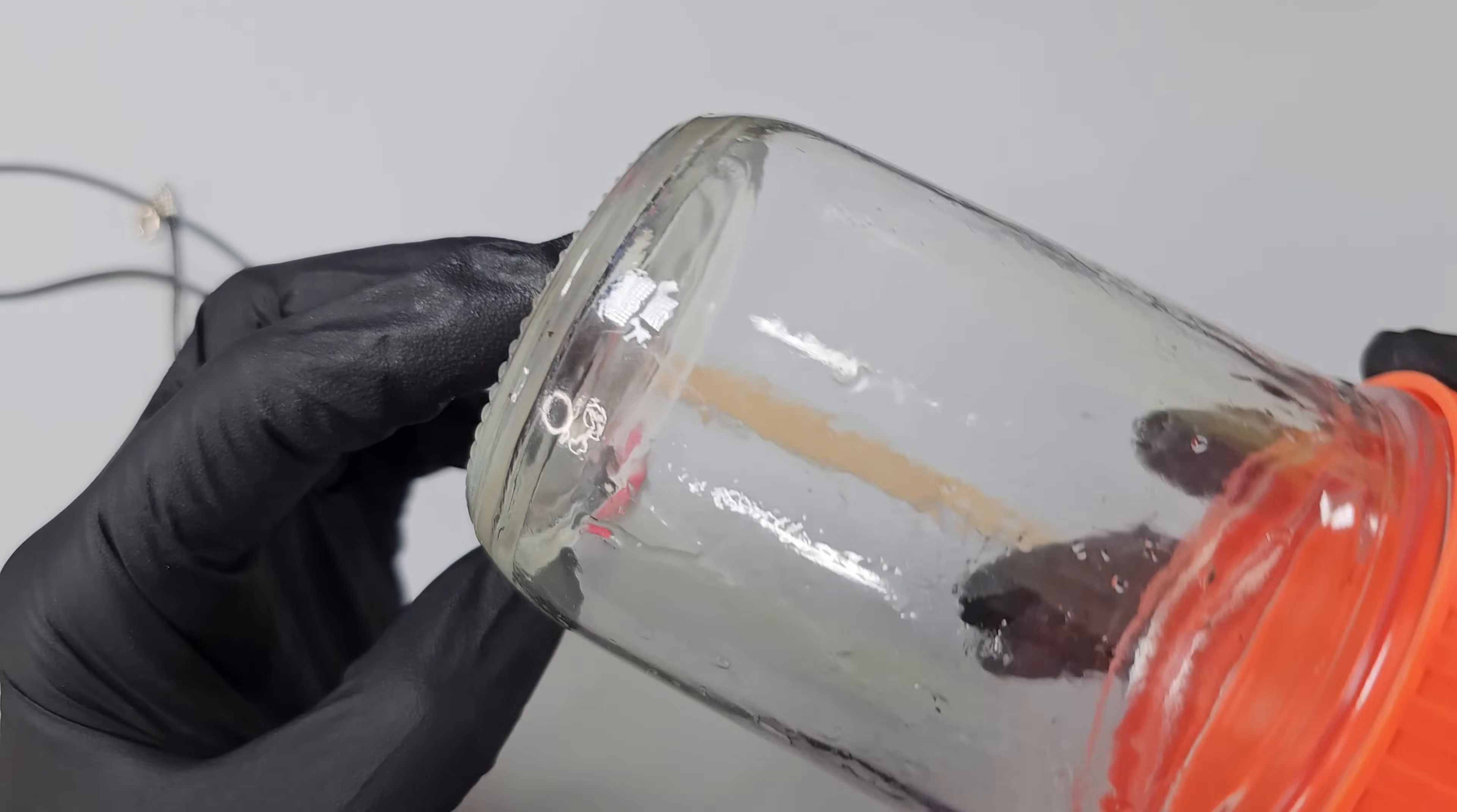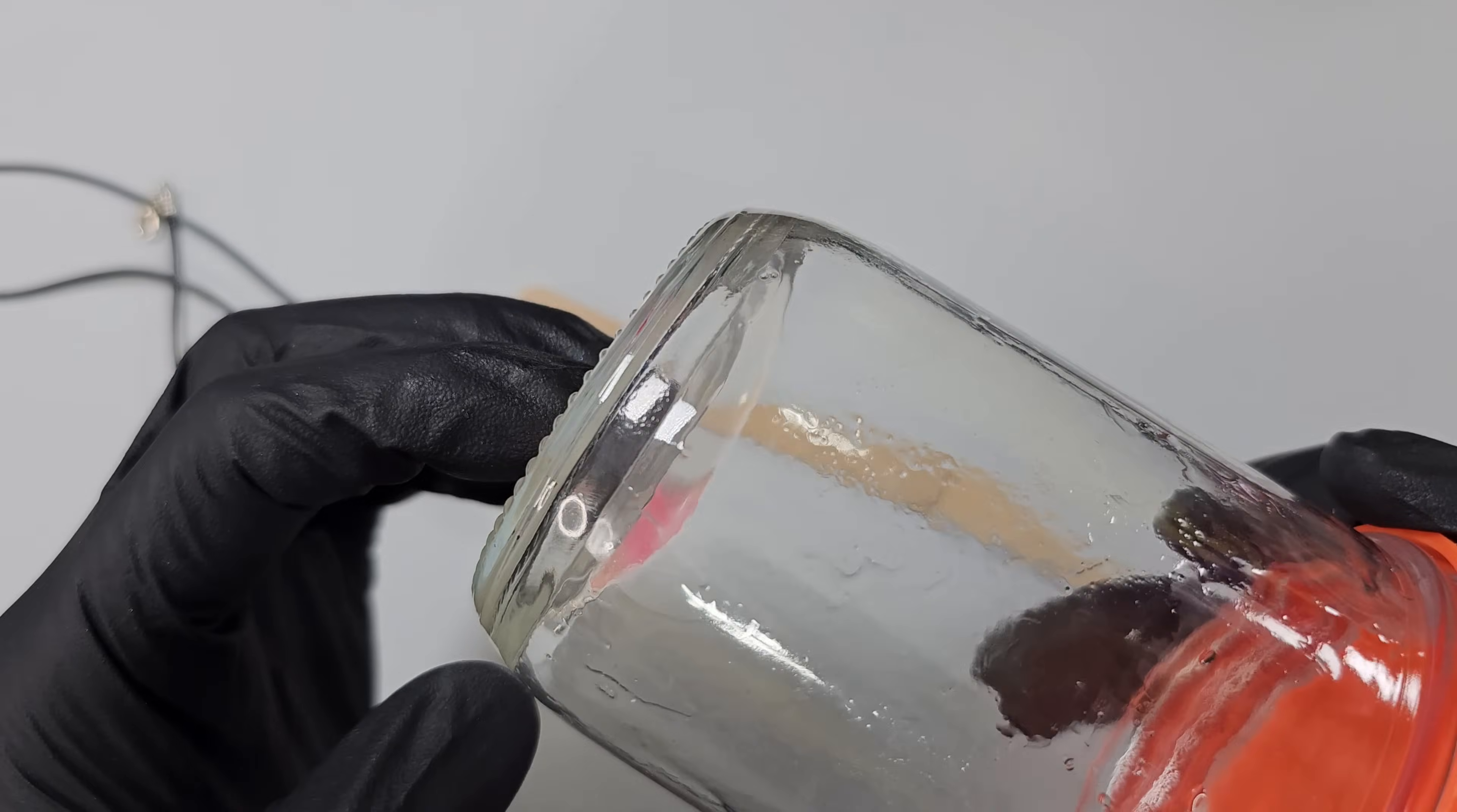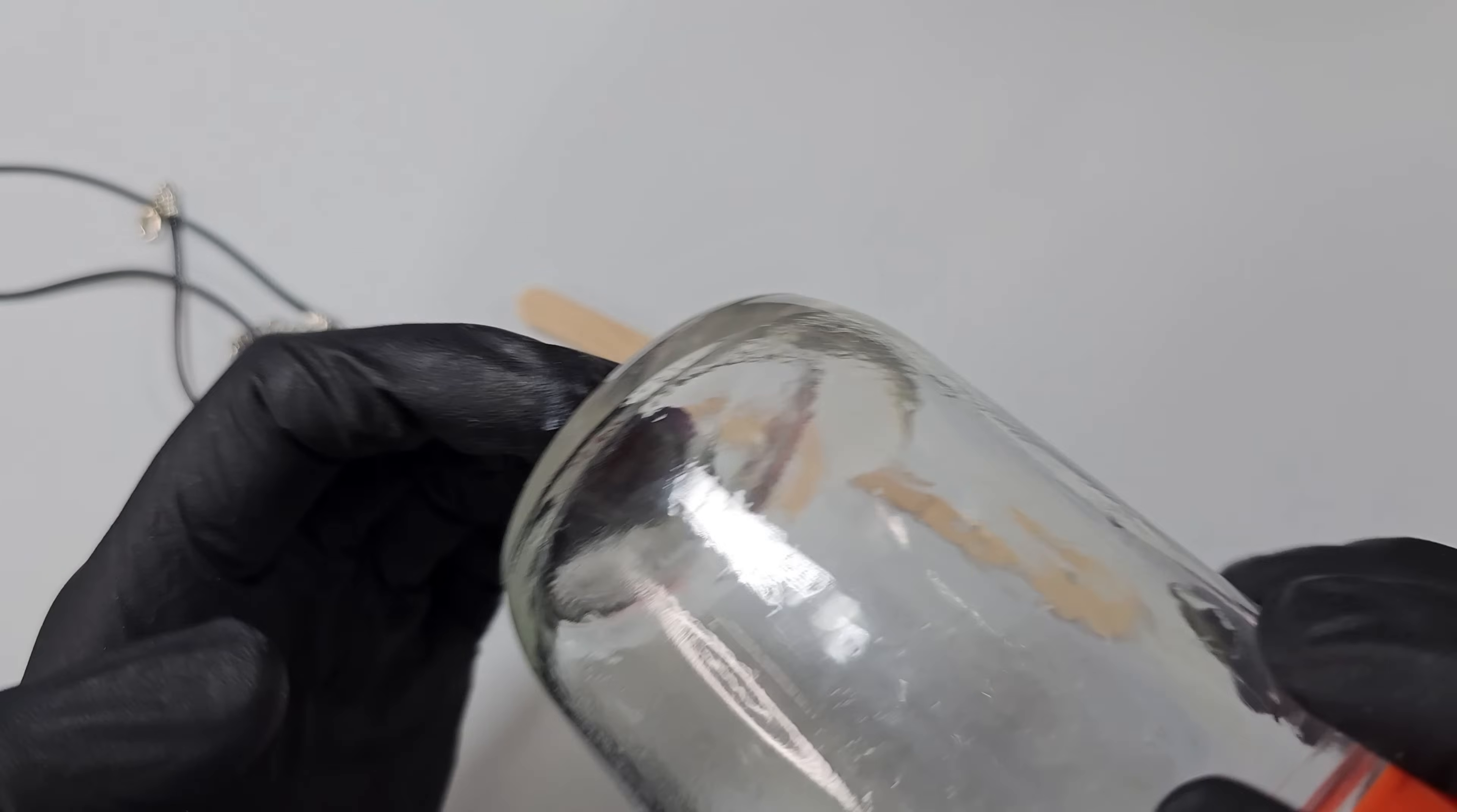But you can see if I tilt the jar the glue will start to run down so it's not setting inside the jar but again it is important to make sure it is really sealed. You can see it's starting to ooze down now but a little does go a long way.